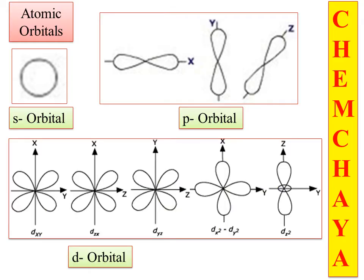For example, we have atomic orbitals. The s atomic orbital is spherical in shape. The p-orbital is oriented in three different directions. The d-orbital is oriented in five different directions.